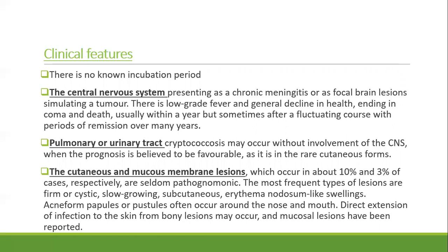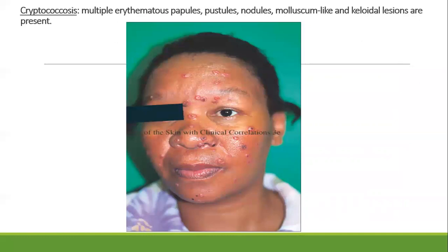Pulmonary or urinary tract cryptococcosis may occur without CNS involvement, when the prognosis is believed to be favorable, as it is in rare cutaneous forms. Cutaneous or mucous membrane lesions occur in 10 percent and 3 percent of cases respectively; they are usually firm or cystic, slow-growing subcutaneous erythema nodosum-like swellings, acneiform papules, and pustules around the nose and mouth. Direct extension from skin to bone may occur and mucosal lesions are also reported. Cryptococcus can look like papules, pustules, nodules, and particularly molluscum contagiosum-like papules with central punctum, as well as keloidal lesions.